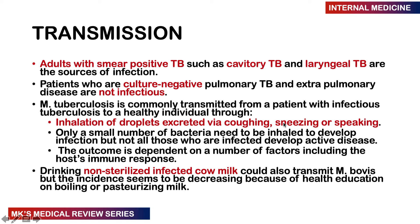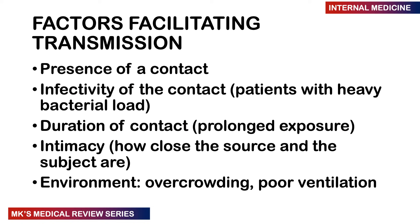Transmission occurs through inhalation of infected droplets excreted when someone coughs, sneezes, or speaks — and you only need a small amount of bacteria to develop disease. Those with a strong immune system will contain the infection into latency; it will later reactivate when immunity dips. Transmission can also occur through drinking non-sterilized infected cow's milk, though this has decreased with education and pasteurization.